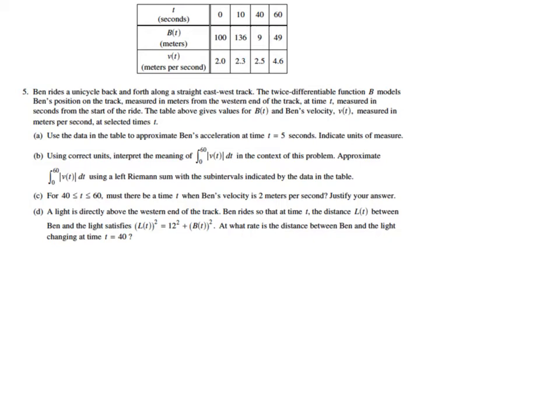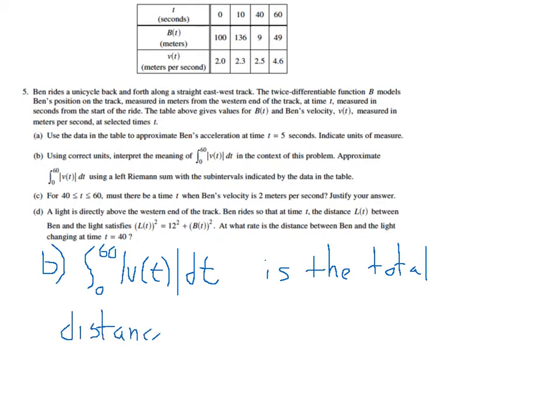So first let's actually write down what we said there, because it does say to interpret the meaning, so that's going to be part of the answer here. So we'll say that this integral from 0 to 60, the absolute value of V(t) dt, is the total distance traveled.